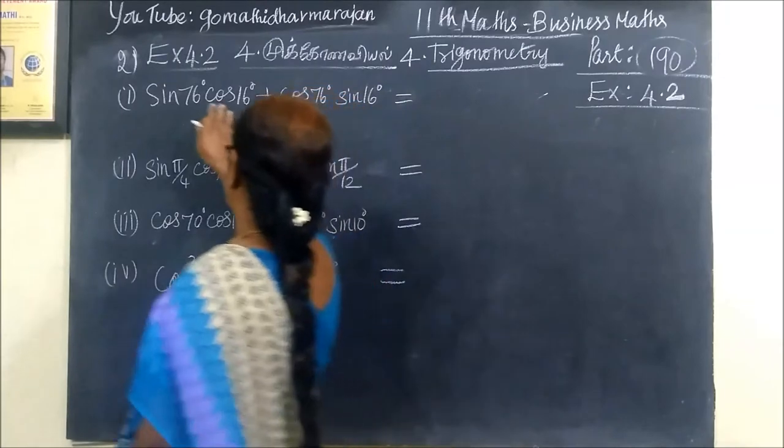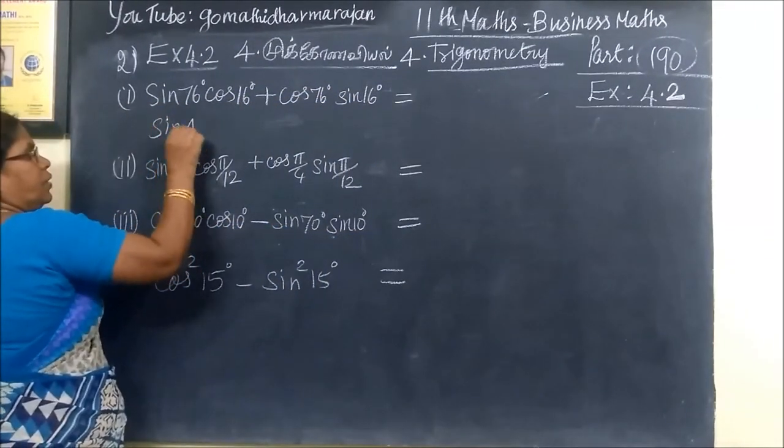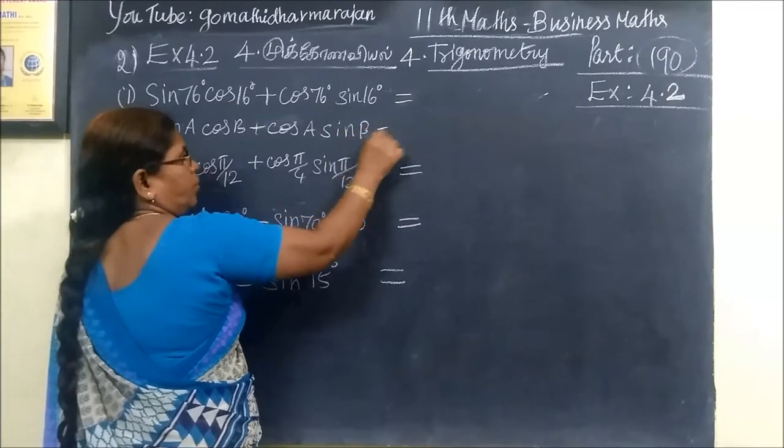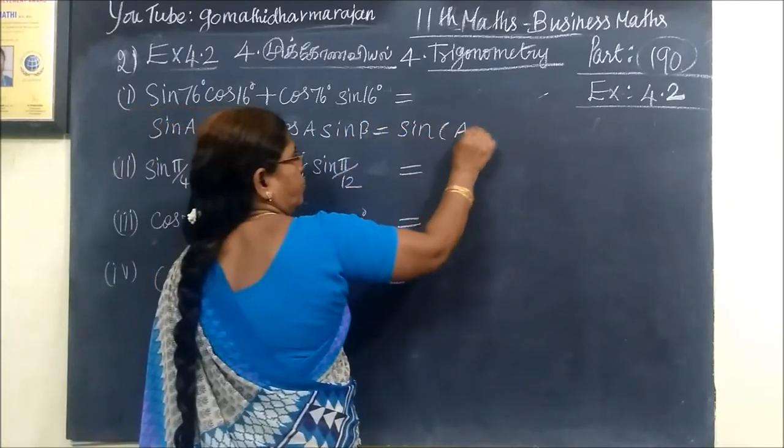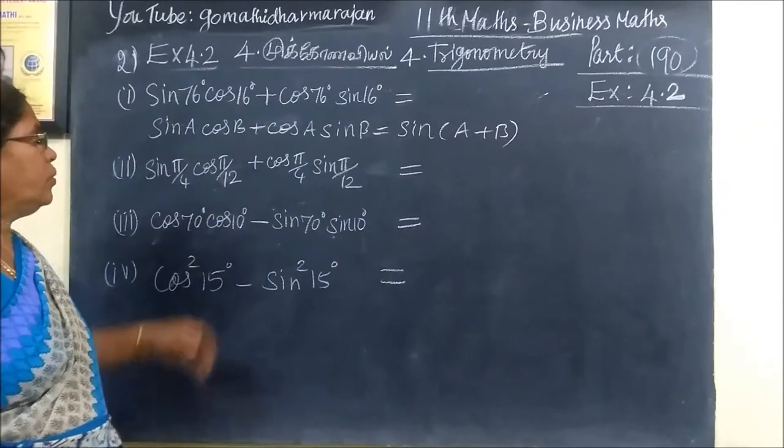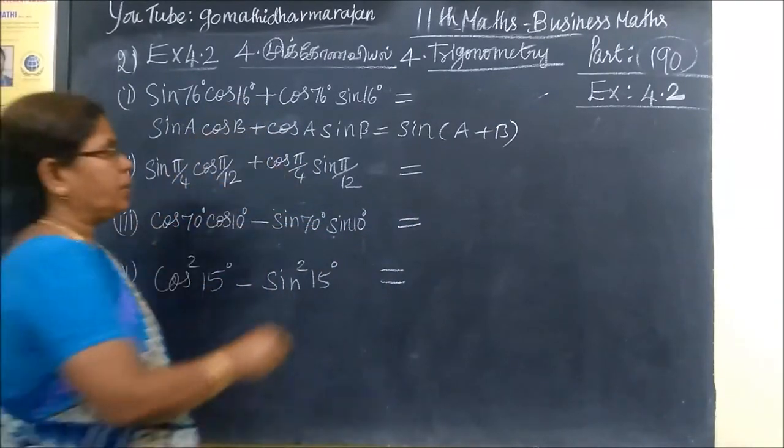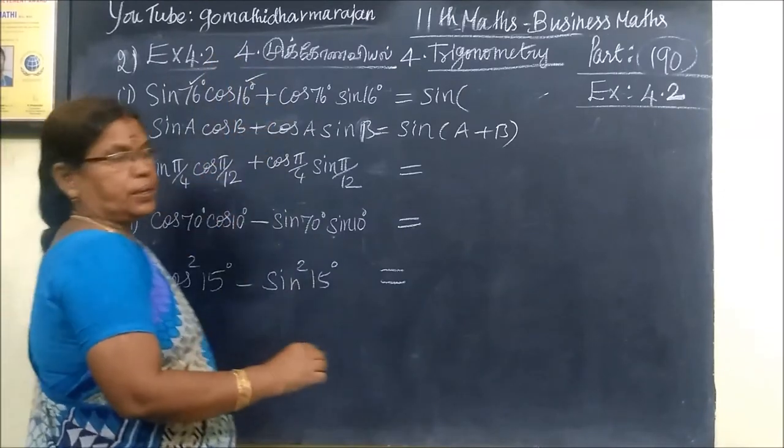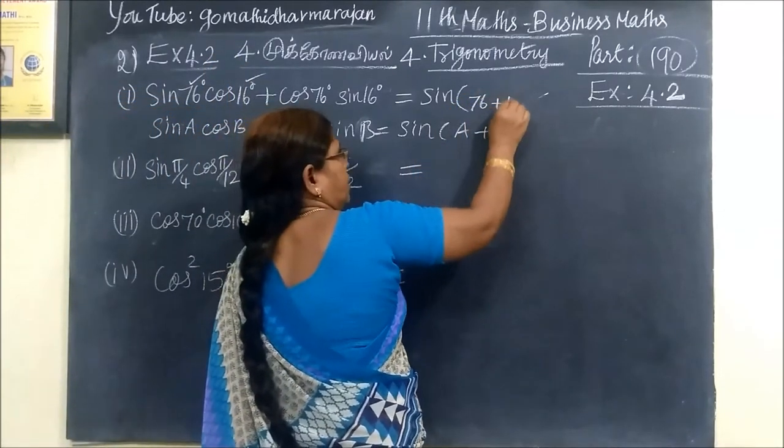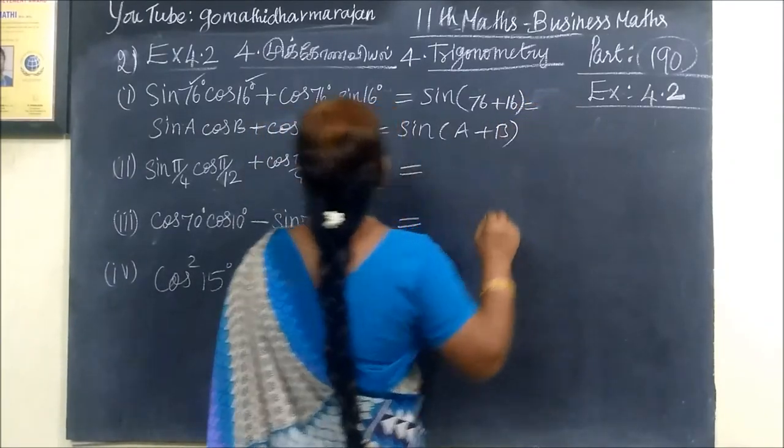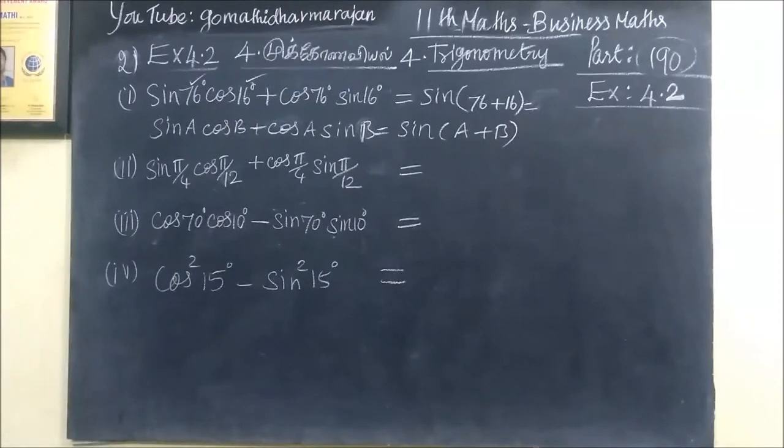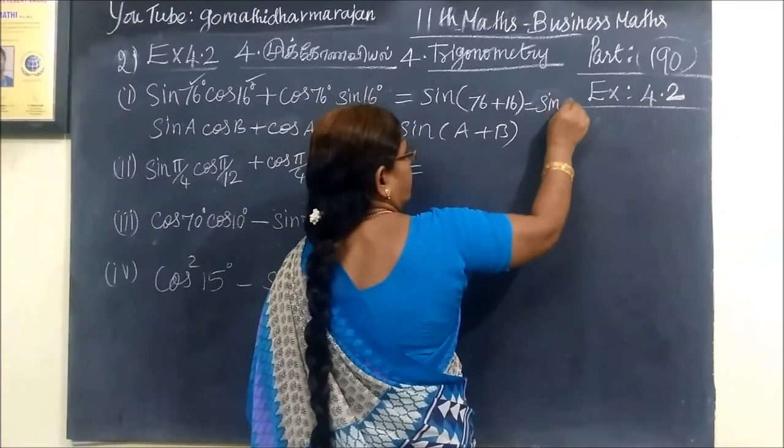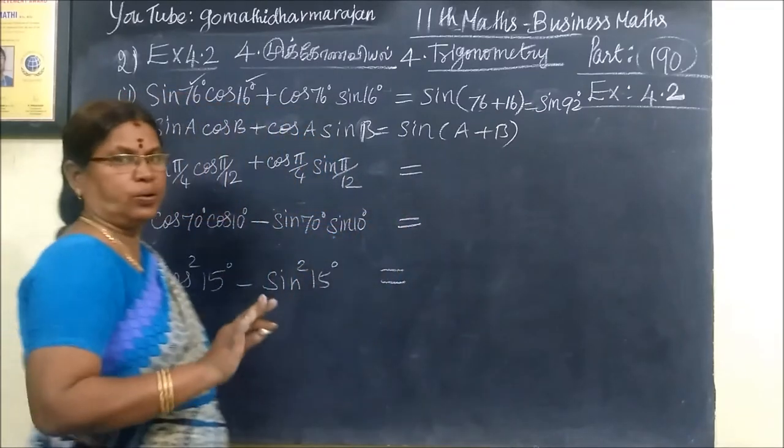First, we need to use sin A plus sin B. So in this formula, we need sin A plus B. Sin A plus B plus cos A sin B. We need sin A plus B. So 76 plus 16. If we add the question correct, 14 or 16? If we add, we are getting sin 92 degrees.